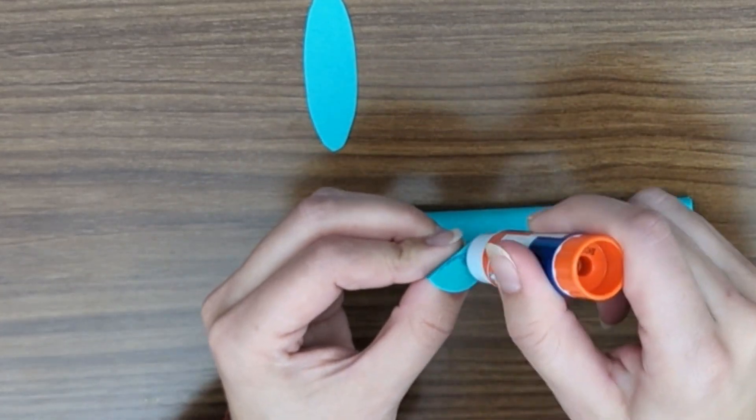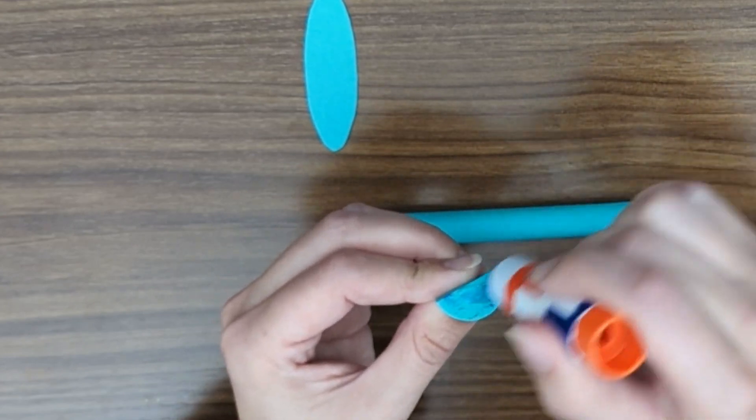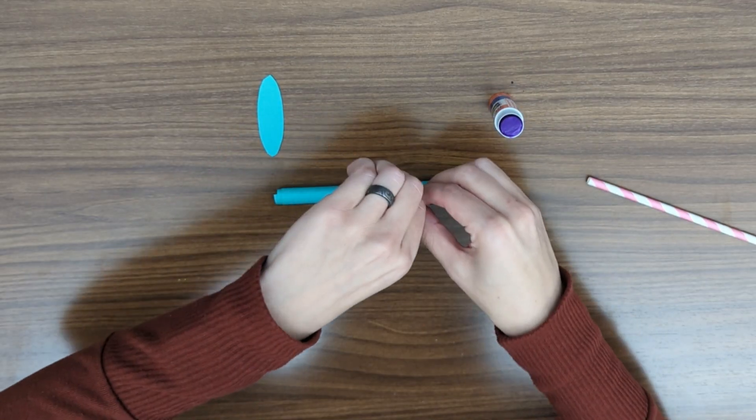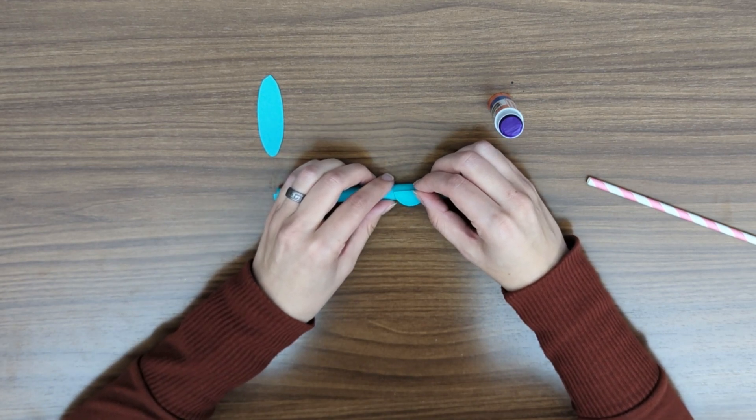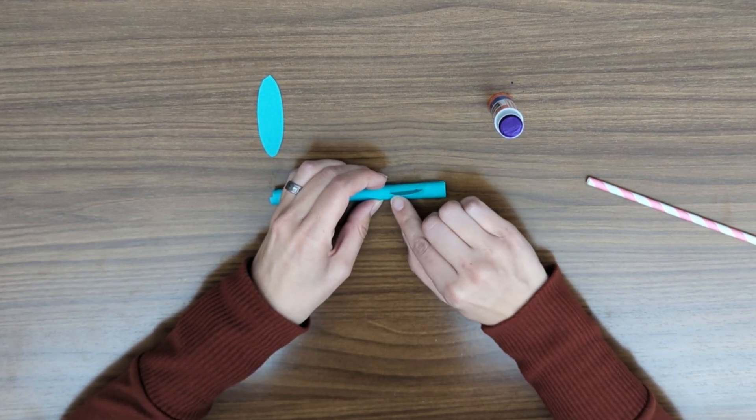Put glue on one side—I'm just going to put it on this side—on one half. Then we're going to stick it on the end, and you can pick whichever side you want to be the end of the rocket. Again, you might have to hold it down just for a little while to make sure that it stays.